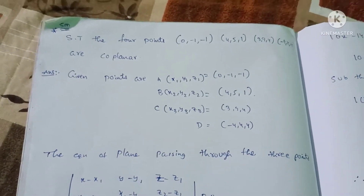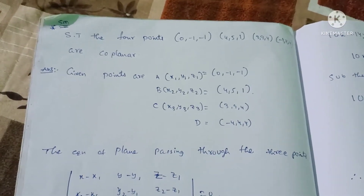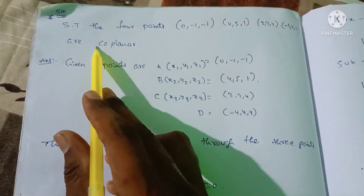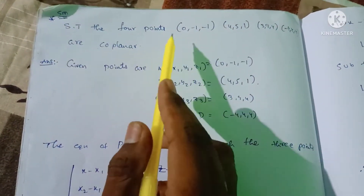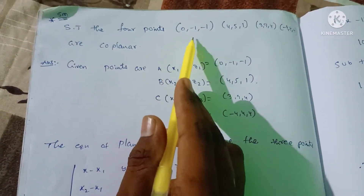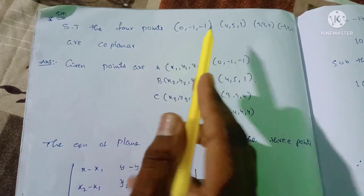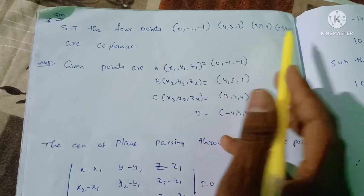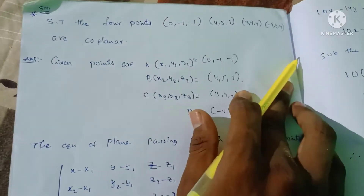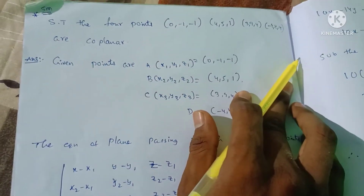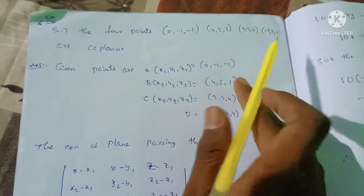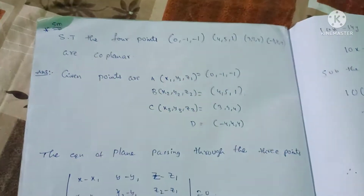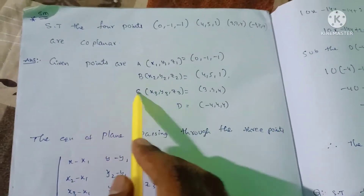The plane. Question 2: Show that the 4 points (0, -1, -1), (4, 5, 1), (3, 9, 4), and (4, -4, 4) are coplanar. These are the 4 points we have to show. First, we have to show the points.